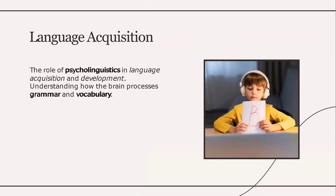Language acquisition: the role of psycholinguistics in language acquisition and development, understanding how the brain processes grammar and vocabulary. It involves understanding how psycholinguistics makes the brain process grammar and a variety of vocabulary and synonyms, and how to enhance language through psycholinguistics, including acquisition and development of a high range of vocabulary and grammar.